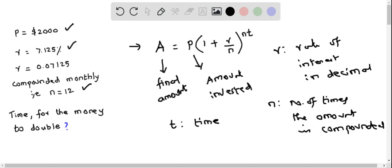Let's substitute the values and calculate t. Since we want the money to double, the amount is twice the invested amount, that is 2P, which equals 2 times 2,000. So A equals 4,000.